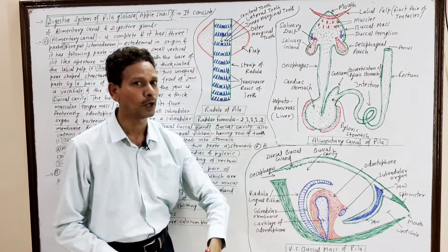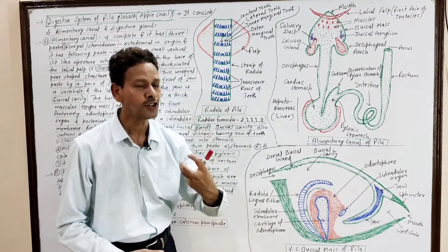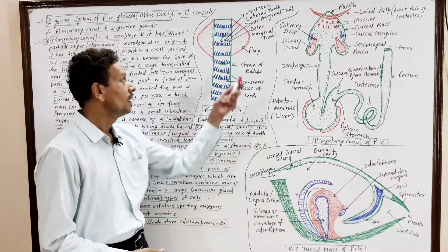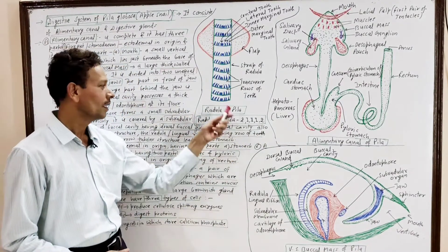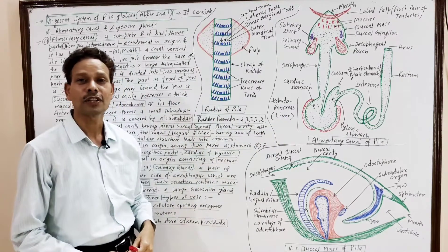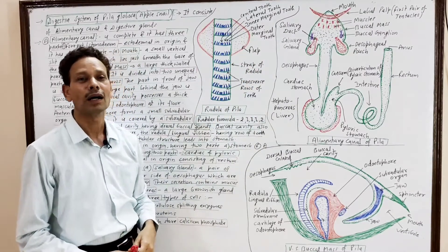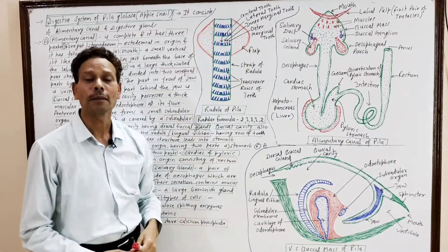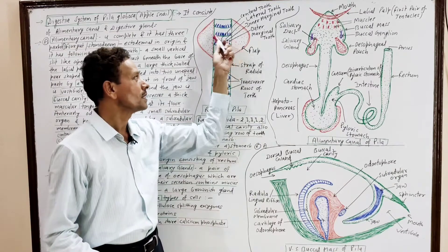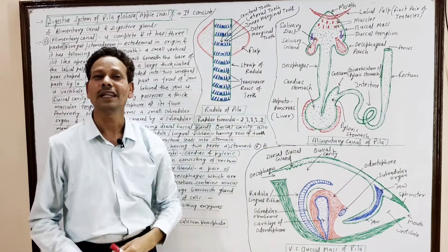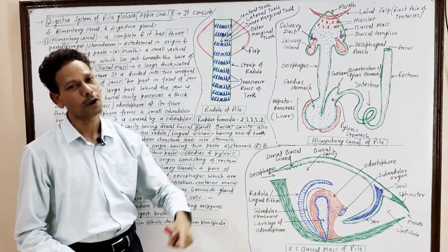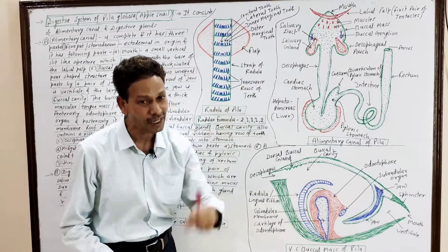This is the structure of the radula of Pila, the cutting organ. The animal is herbivorous and feeds upon fleshy, succulent aquatic plants. The radula has a strap-like structure. Its anterior region has a flap, and the strap of the radula bears numerous transverse rows of teeth. Each transverse row consists of seven teeth.